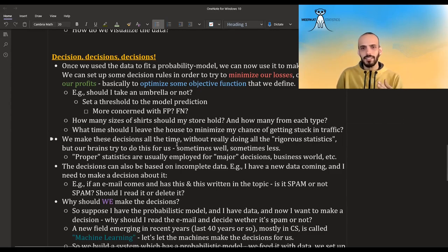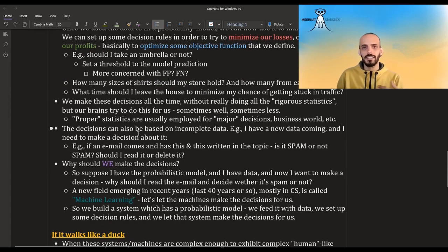And so these kinds of decisions, we are making them all the time without really doing any rigorous statistics. It's just, our brain is doing the statistics for us. Proper statistics usually come into play when there are major decisions and they are taken by corporates and governments, et cetera.